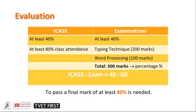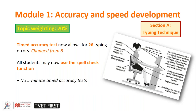At least one timed accuracy should be completed every week. Usually a Friday is a good time to do it — students sit down and the first 10 minutes of the lesson is a timed accuracy. Other colleges do drill work in the first 10 minutes of every lesson and then start with the lesson plan for the day. In Module 1, the accuracy and speed development, the timed accuracy test now lasts for 26 typing errors — this was changed from eight. All students may now use the spell checker function, and there's no longer a five-minute timed accuracy test; we keep it up to the 10-minute accuracy test.